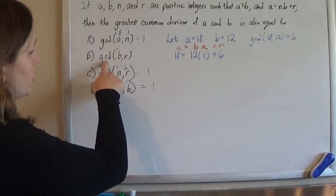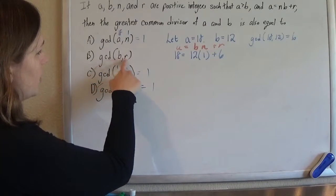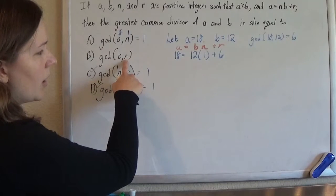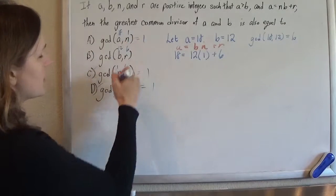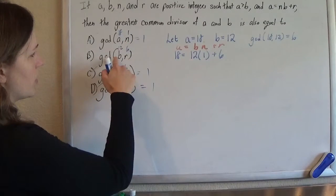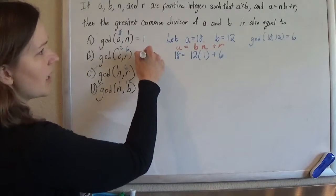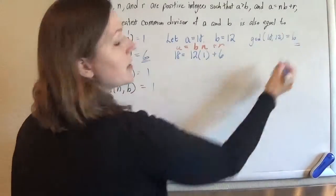And we can show that this one is true. Gcd of b and r, b is 12 and r is 6. And the greatest common divisor of 12 and 6 is 6. Oh, sweet. It worked.